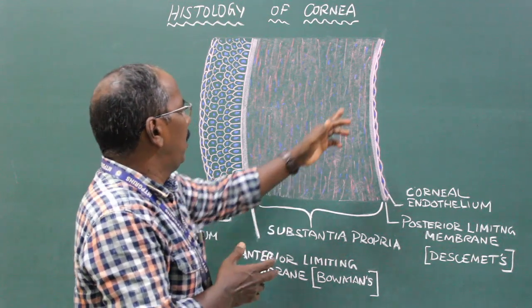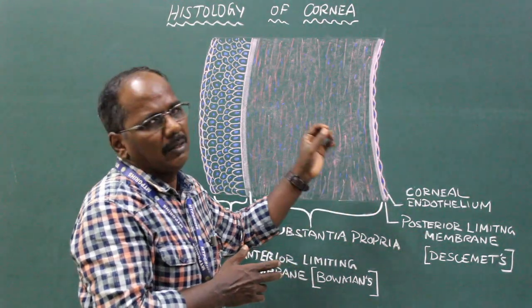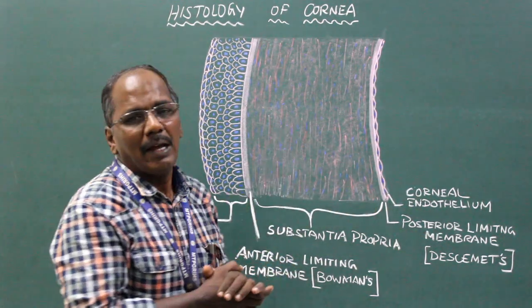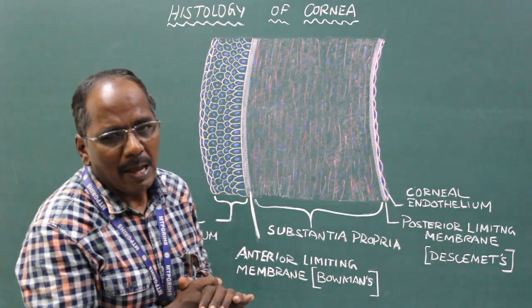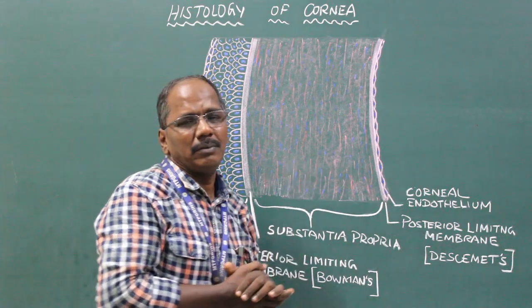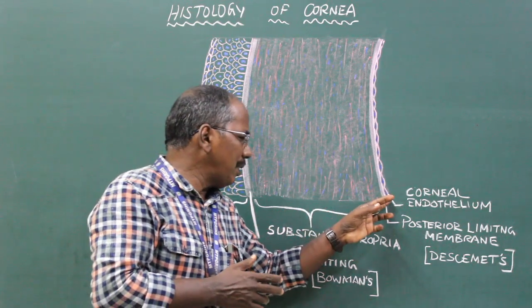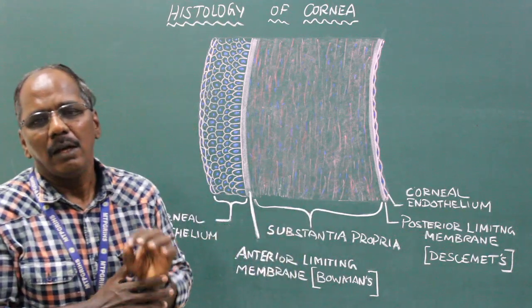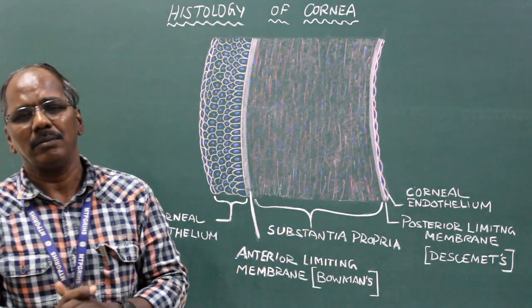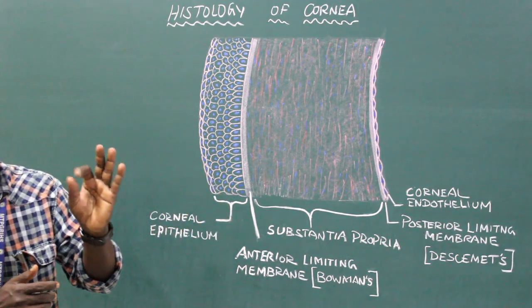The innermost layer of the cornea is covered with, or lined by, simple squamous epithelium. It is also known as posterior epithelium or corneal endothelium. So this is the histology or structure of cornea.